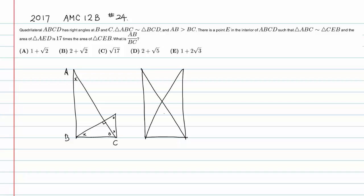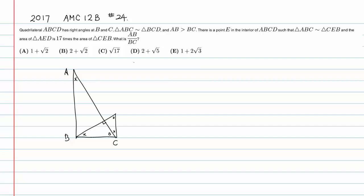This is quadrilateral ABCD. These are corresponding angles so the triangles are similar — not congruent, just similar in the general sense. So we take this setup going forward.